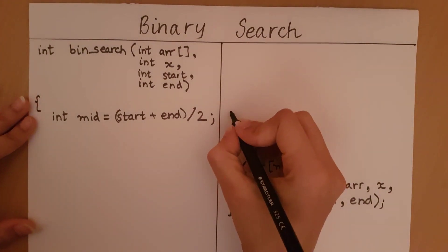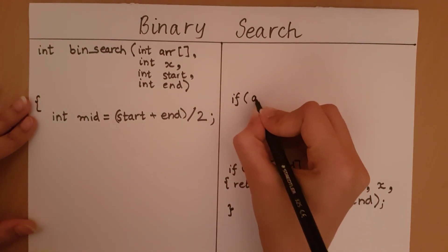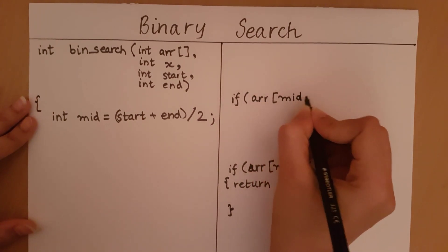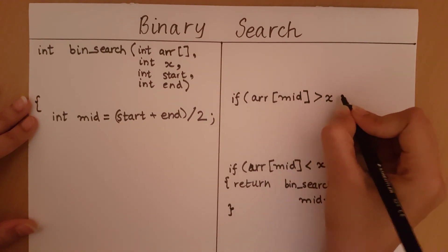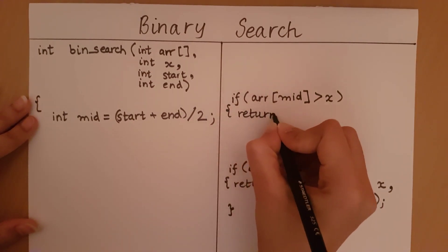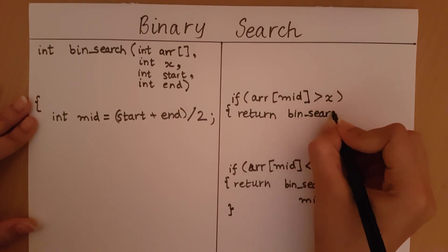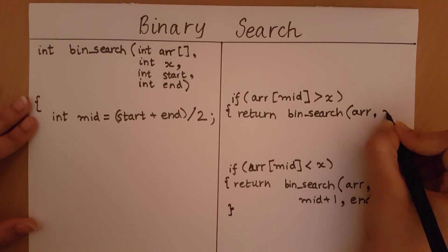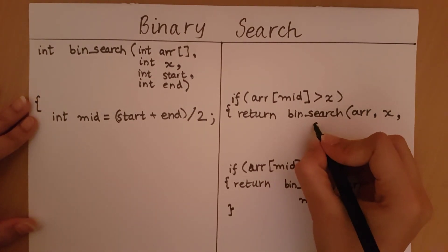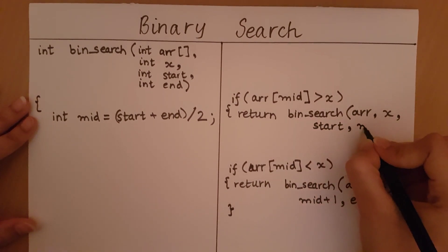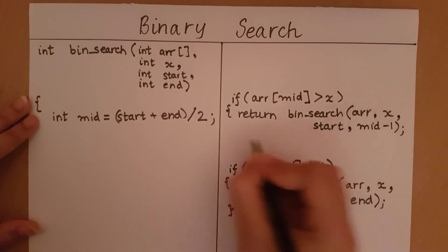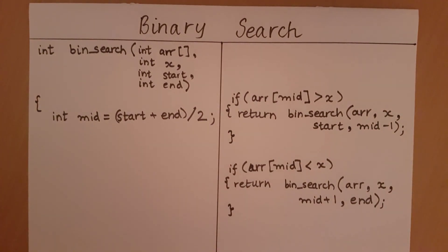Let's look at the next case. If array of middle was greater than our element, in such a case we would like to perform the binary search to the left of the middle element. So we will perform it on the same array with the same element. The start and end indexes: we are going to start at the same start, but we are going to end at an index middle minus one. So if the element found at the middle is greater than the element we are searching for, we will search in the left part of the array, which begins at start and ends at middle minus one.